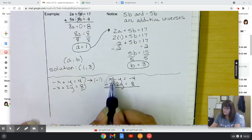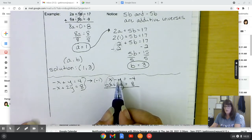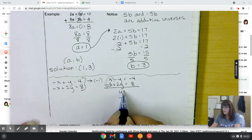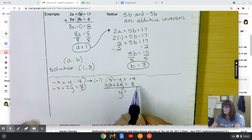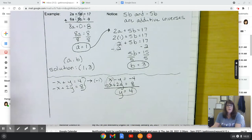Those cancel each other out. Negative y plus 2y equals y. Negative 4 and 8 is a positive 4. That's it. That's the whole solution. Y equals 4.